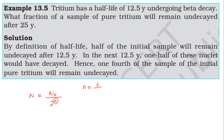The total time is 25 years, and the half-life is 12.5 years, so n = 25 / 12.5 = 2.